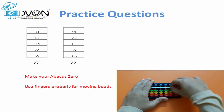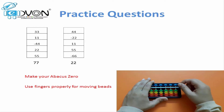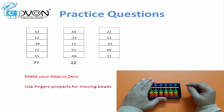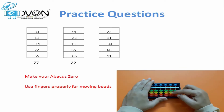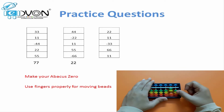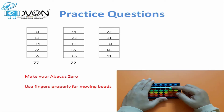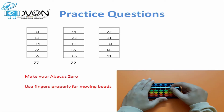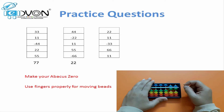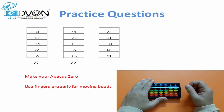Next question. Make your abacus zero. 22 plus 11 minus 33 plus 66 plus 11. Answer: 77.